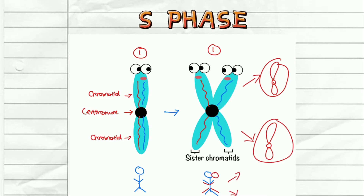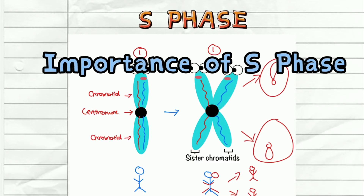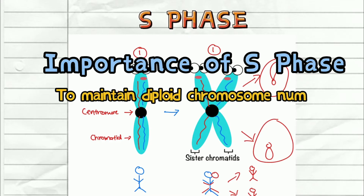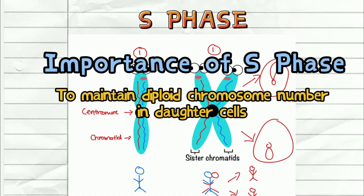Just like when this human splits, it becomes back into two fully formed humans. Without S phase, your chromosome cannot split properly and you will not retain the original number of chromosomes. So remember — if they ever ask what the importance of S phase is, it's actually to retain the diploid chromosome number in the daughter cell. Diploid chromosome number being the full chromosome number.